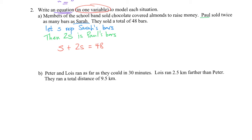I want to go through this problem a different way, because there's not necessarily one right way to translate. Sometimes what causes difficulty with word problems is that there are multiple ways to translate things. In the first solution, we used the second sentence to build our let and then statements. Now let's use the third sentence instead.